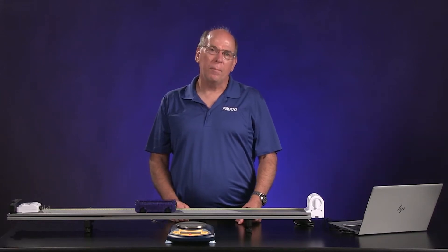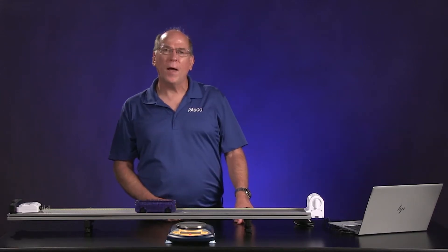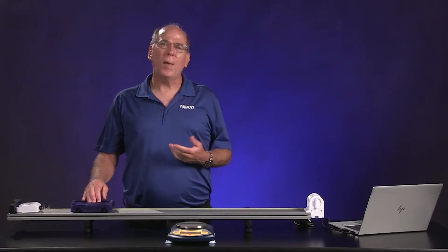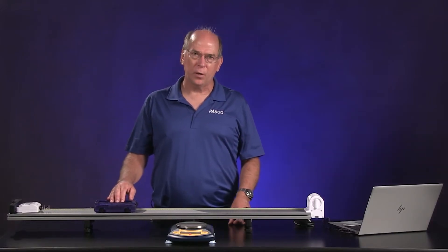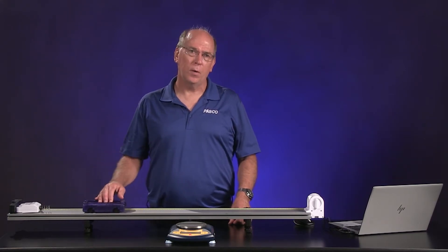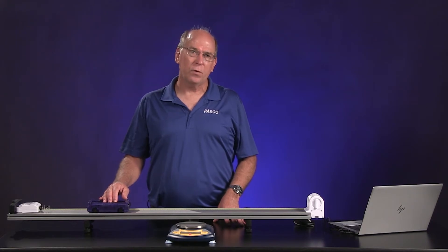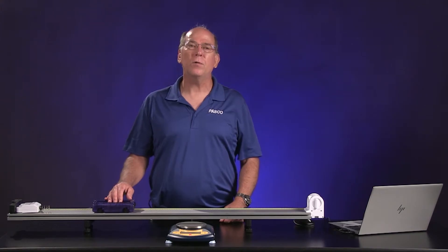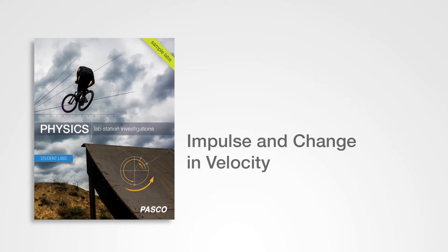We know from Newton's third law that when two objects interact, they apply forces to each other that are equal in magnitude and opposite in direction. How do those forces change during a collision? How does this affect the motion of the objects? In this investigation, you will find out. This is impulse and change in velocity.